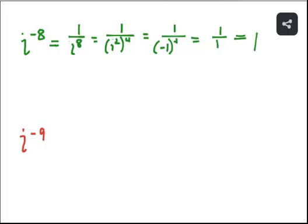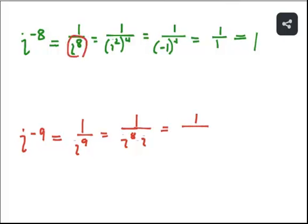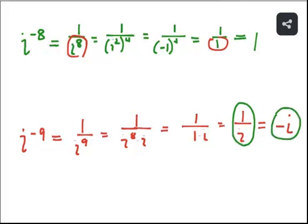For i⁻⁹, we write it as 1/i⁹. We said i⁹ = i⁸ · i, and we just showed i⁸ = 1, so this becomes 1/(1 · i) = 1/i. We already showed that 1/i = −i, so i⁻⁹ = −i.